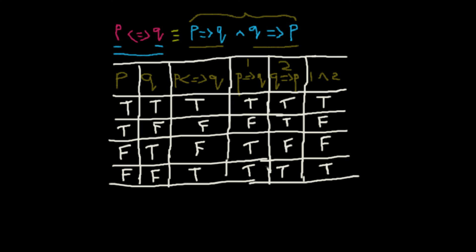Therefore, we can see that the propositions are logically equivalent because this column 1 is equal to this column. If we replace 1 and 2 with these two propositions, we will get the entire statement here. We know the truth value of P biconditional Q is true, false, false, true, which is similar to true, false, false, true.